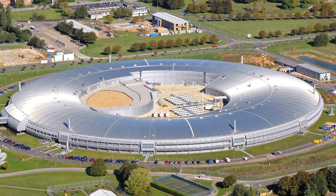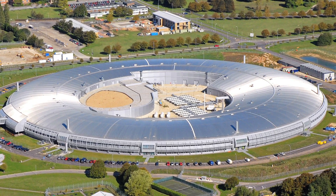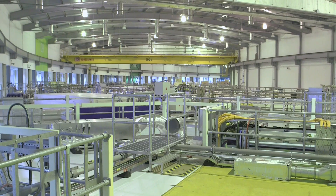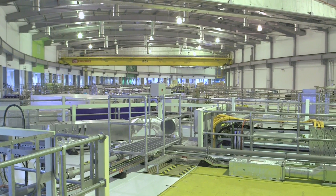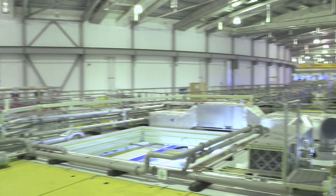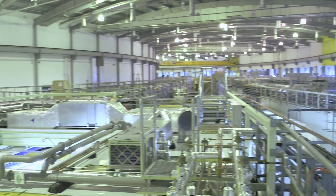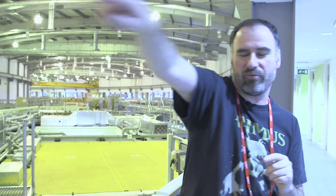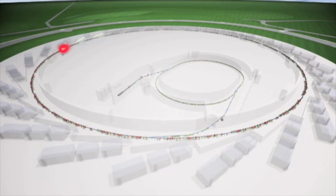We are at the Diamond Light Source just outside Oxford in England. We're here for the next week or so to do an experiment and we are standing in the synchrotron right now. A synchrotron is a particle accelerator where electrons are circulated around in a roughly circular trajectory, very, very close to the speed of light.